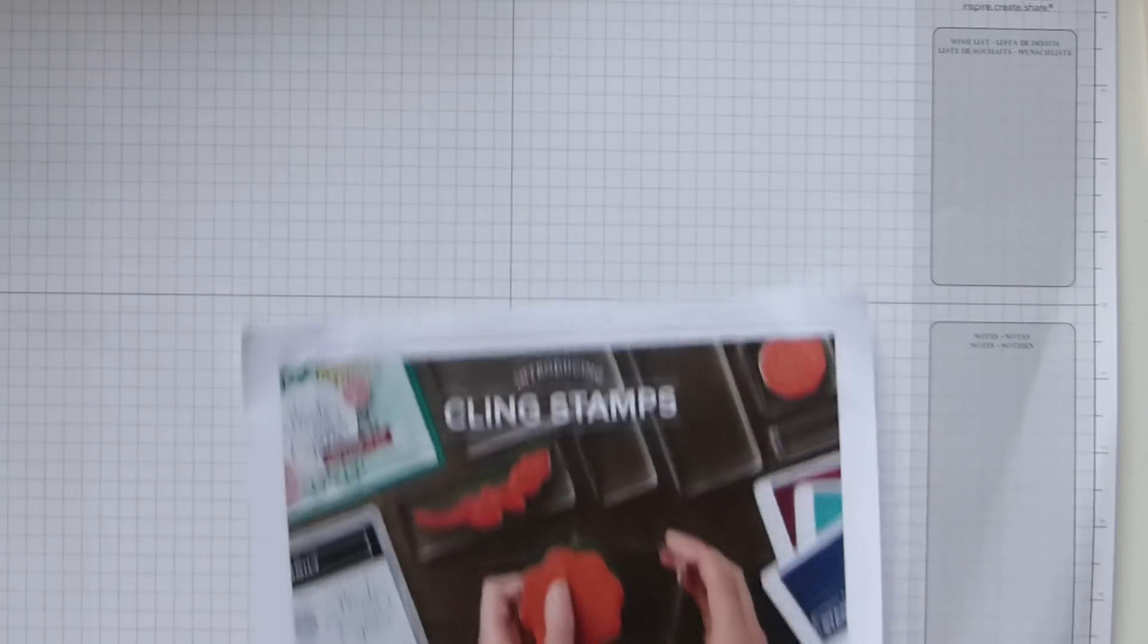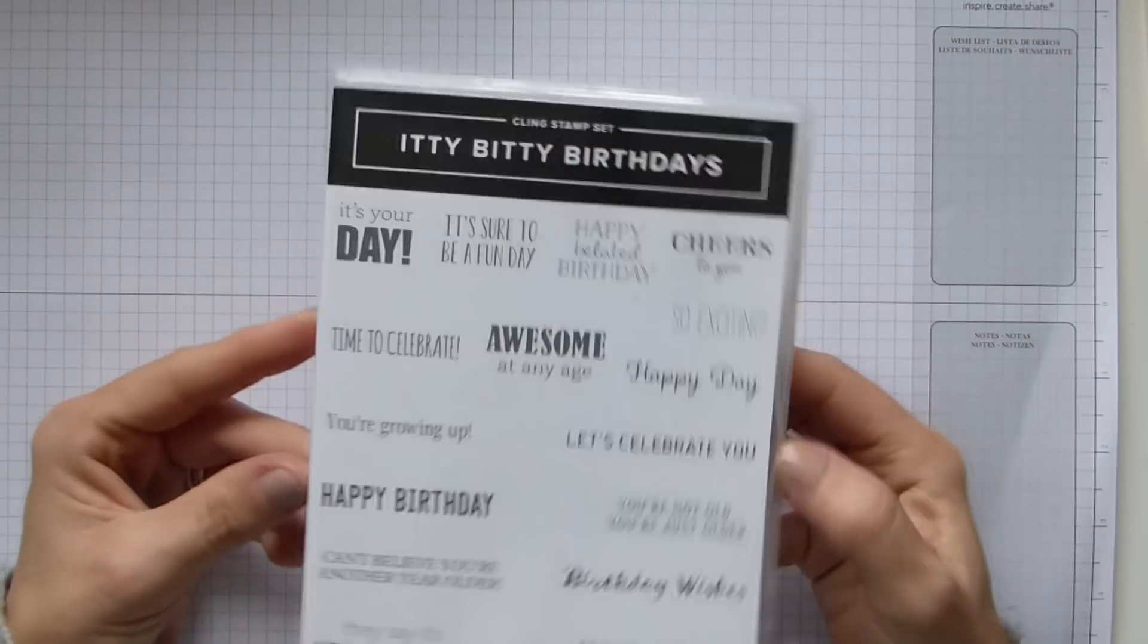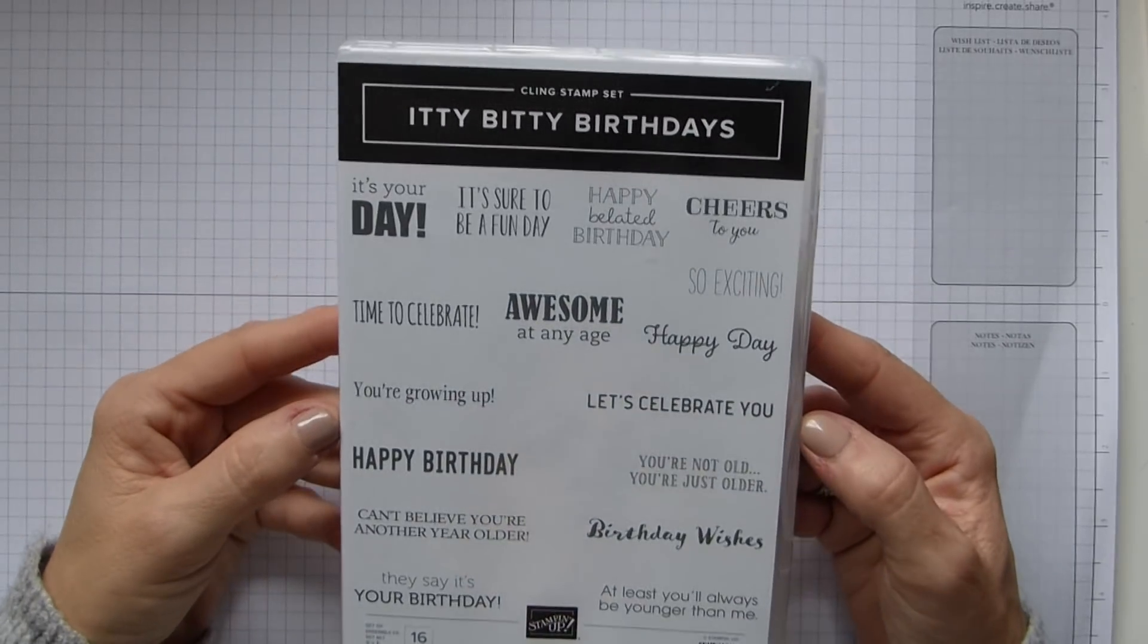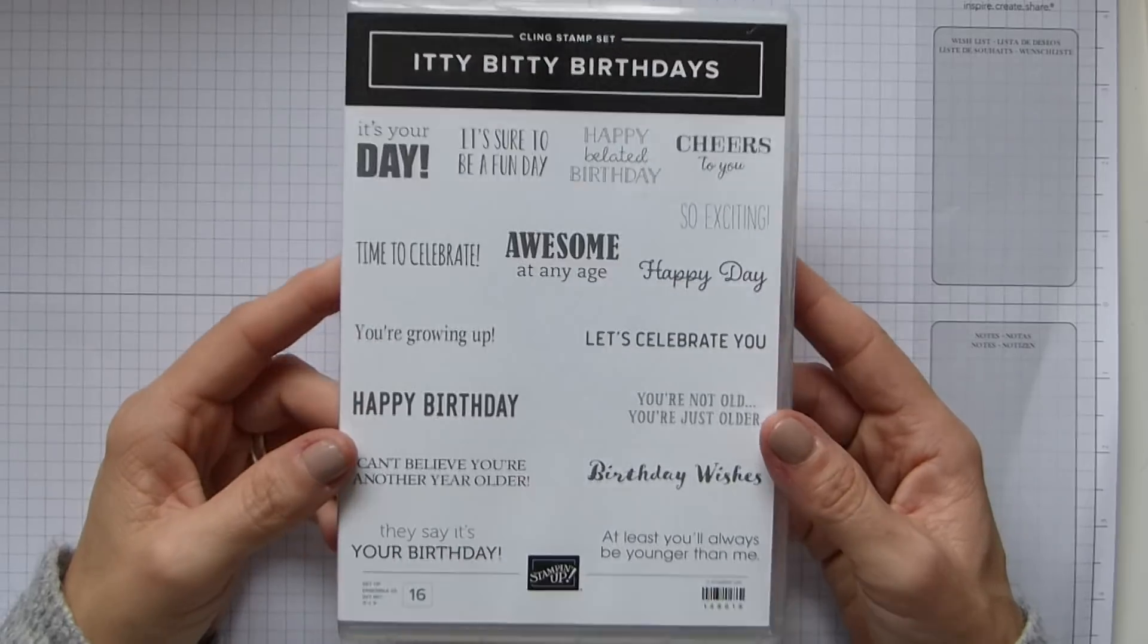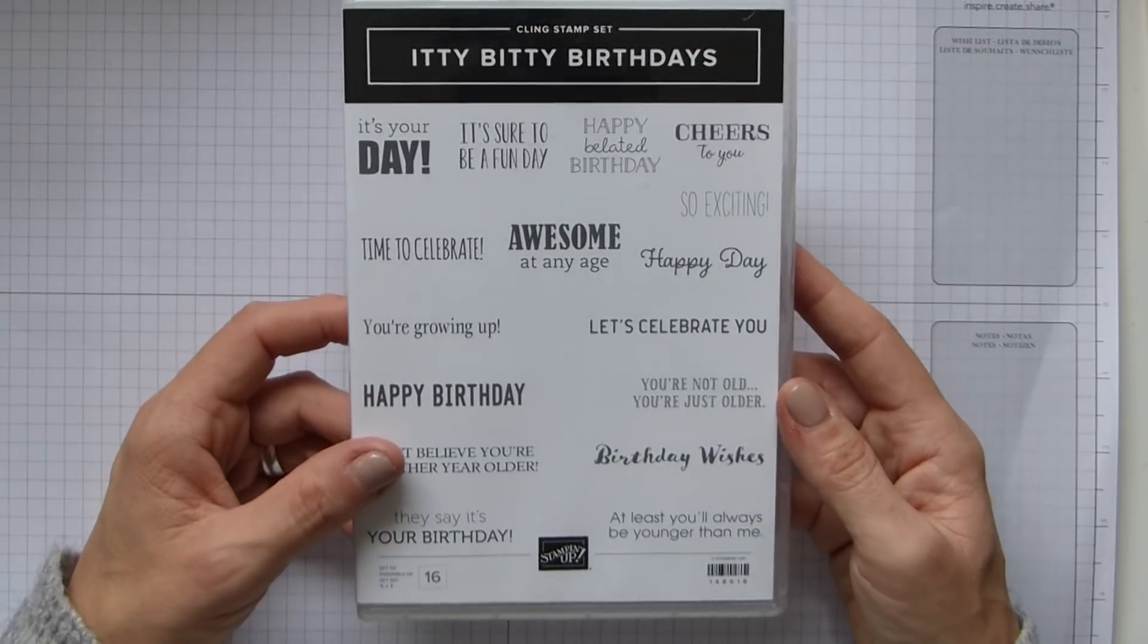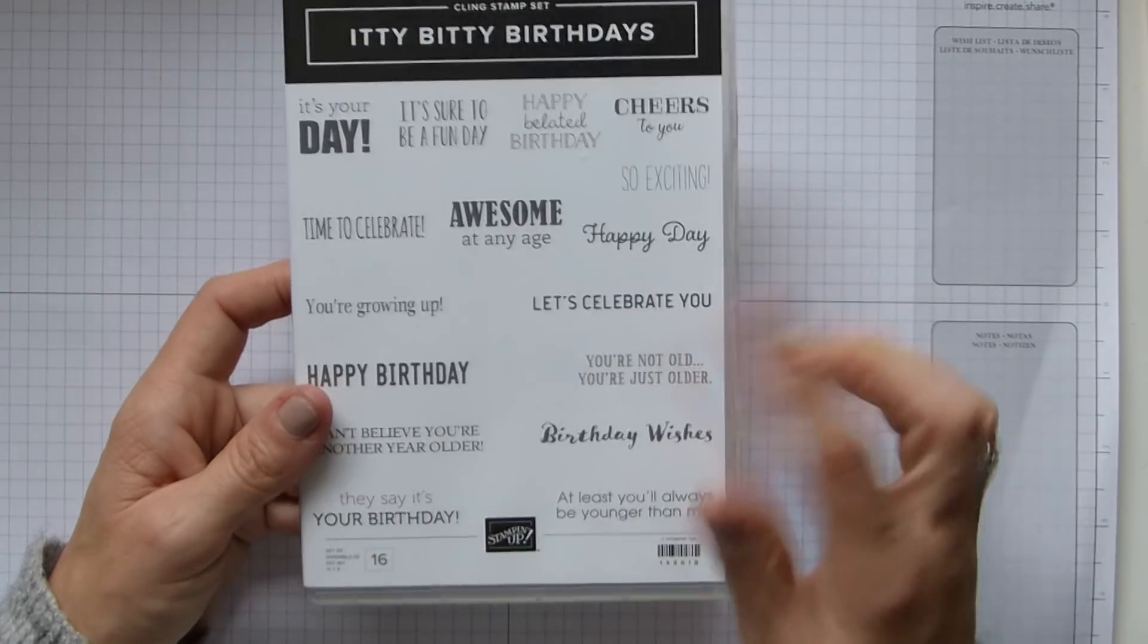So initially you need to know how to prep them. This is one of the stamp sets I was lucky enough to receive on stage. This was my Prize Patrol, which is basically a free giveaway to people who have a certain number or color on their badge. So this was the one I won.